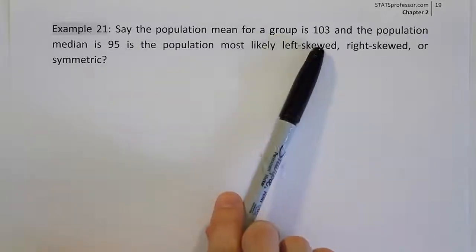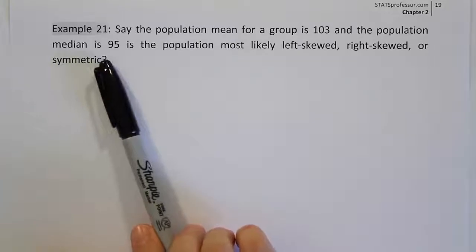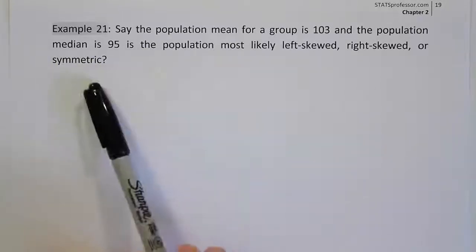Say the population mean for a group is 103 and the population median is 95. Is the population most likely left skewed, right skewed, or symmetric?